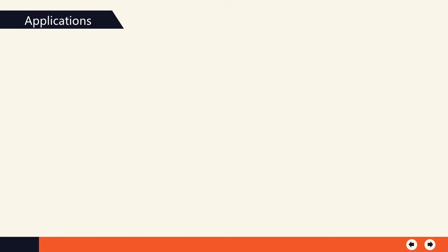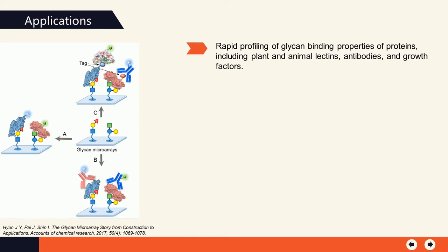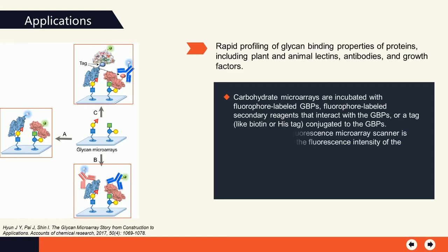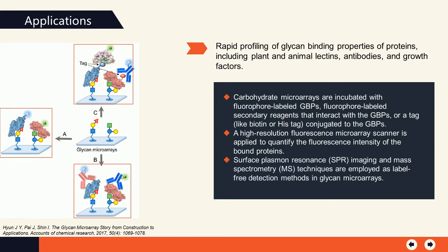There are many applications for glycan microarrays. First, rapid profiling of glycan-binding properties of proteins, including plant and animal lectins, antibodies, and growth factors. To achieve this, carbohydrate microarrays are incubated with fluorophore-labeled glycan-binding proteins, fluorophore-labeled secondary reagents that interact with the glycan-binding proteins, or a tag like biotin or His-tag conjugated to the glycan-binding proteins. A high-resolution fluorescence microarray scanner is then applied to quantify the fluorescence intensity of the bound proteins. In addition, surface plasmon resonance imaging and mass spectrometry techniques are employed as label-free detection methods in glycan microarrays.